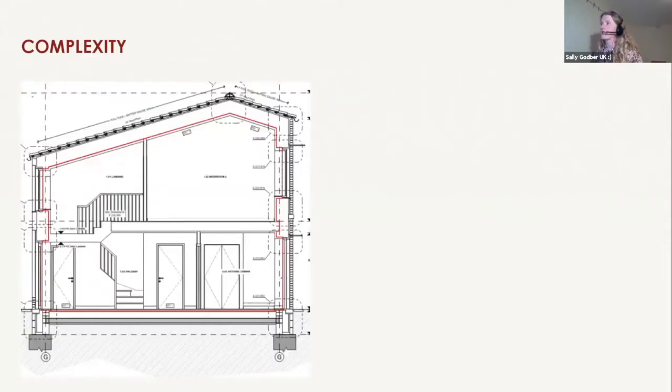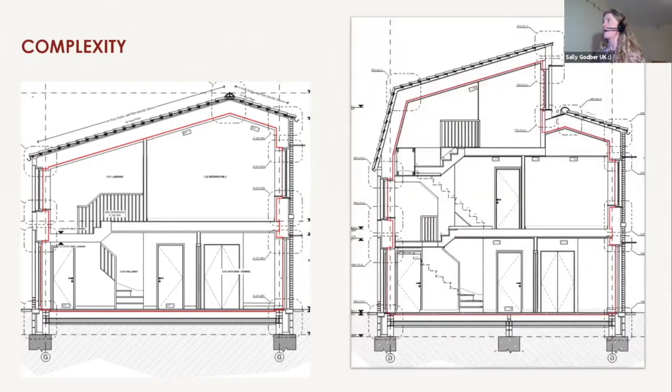Complexity was something we were really pushing through all the way, but particularly at the beginning. This is the section through the housing, and you can see it's relatively simple. In comparison, the houses with the pop-ups have four extra junctions in section, and if you take a section the other way, there's an additional four. Just lots of extra bits to think about.